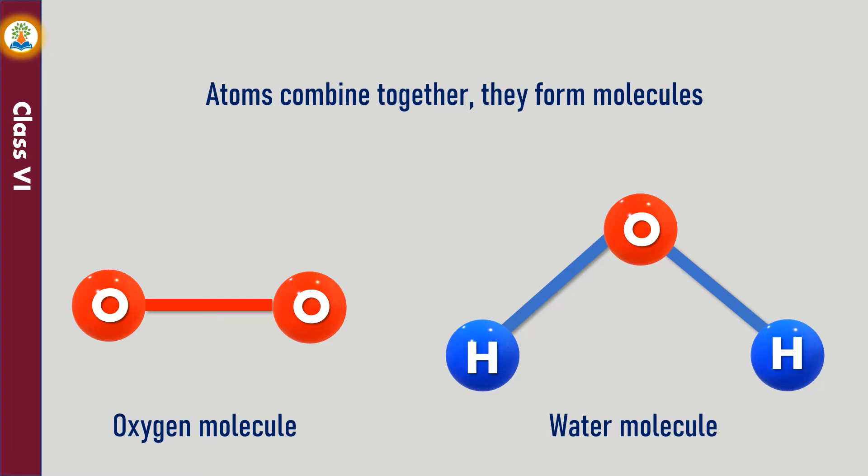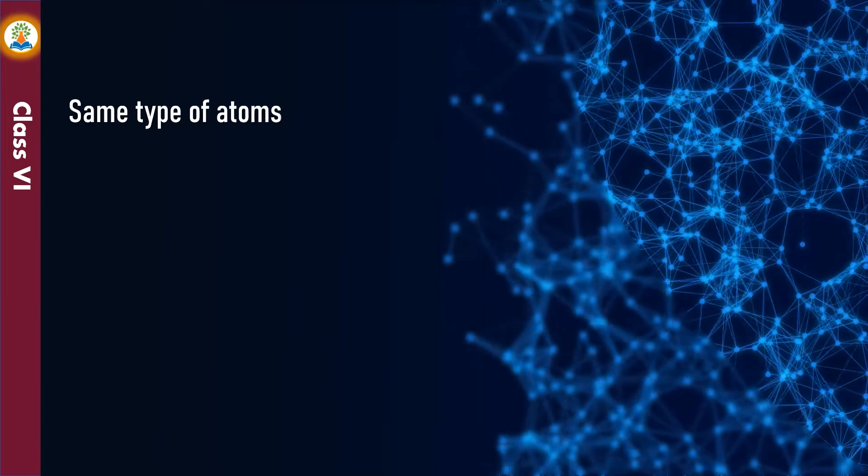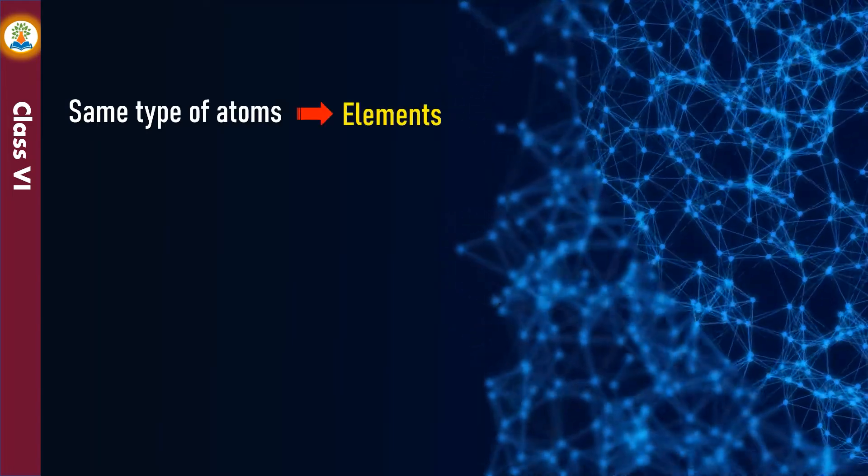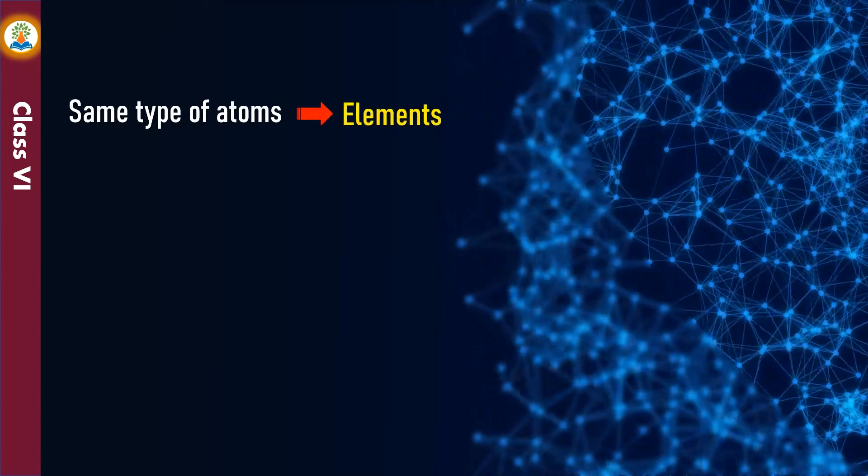A water molecule is made of two hydrogen atoms and one oxygen atom. An element is a substance made of same type of atoms.